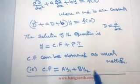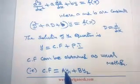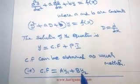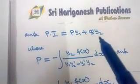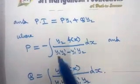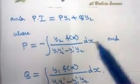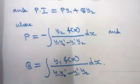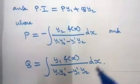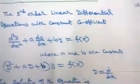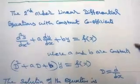The coefficient of A in the complementary function is taken as y1, and the coefficient of B is taken as y2. The particular integral is P·y1 + Q·y2, where P = −∫[y2·f(x) / (y1·y2' − y1'·y2)] dx, and Q = ∫[y1·f(x) / (y1·y2' − y1'·y2)] dx. Here f(x) is the right-hand side of the given differential equation. This is the procedure to solve using the method of variation of parameters.